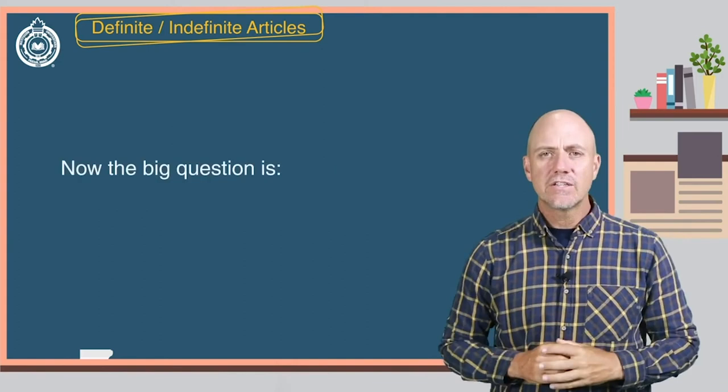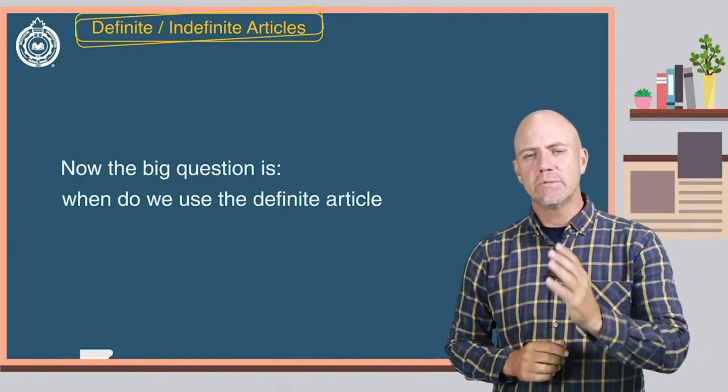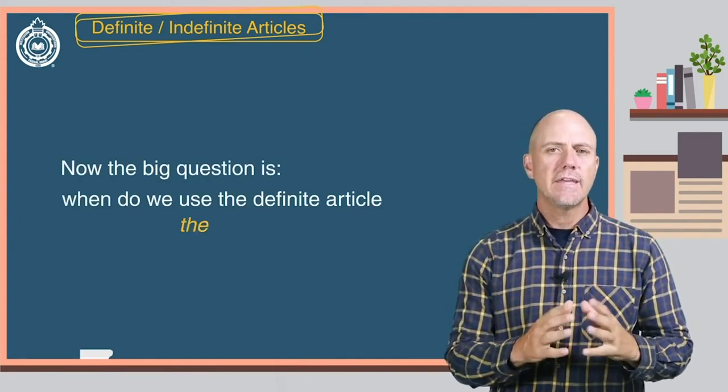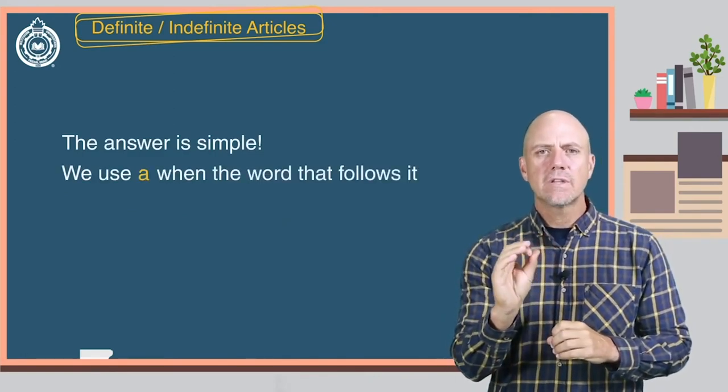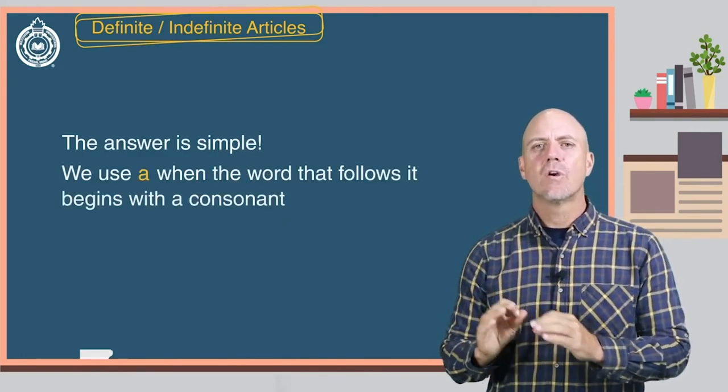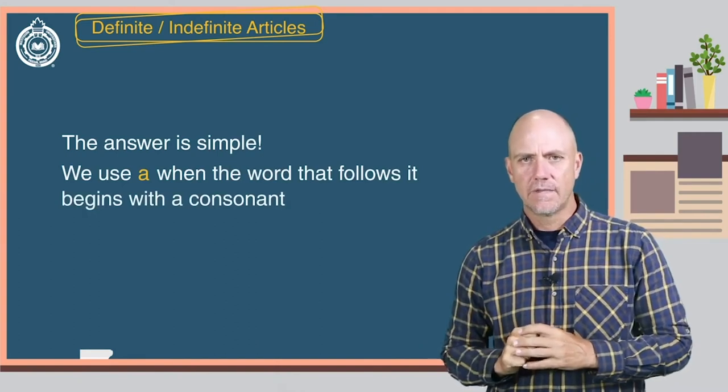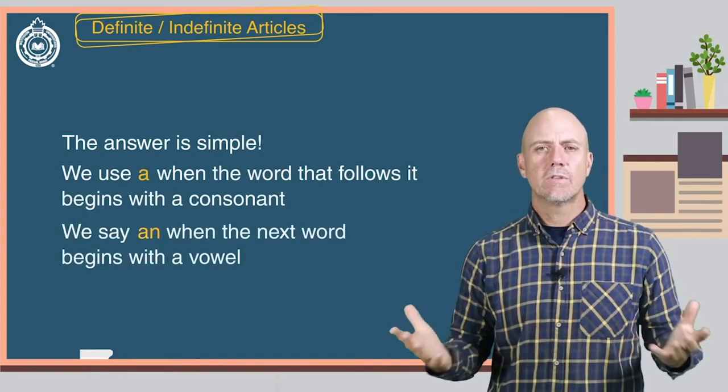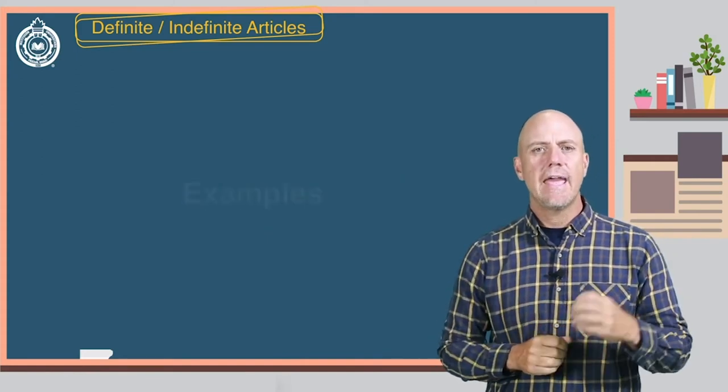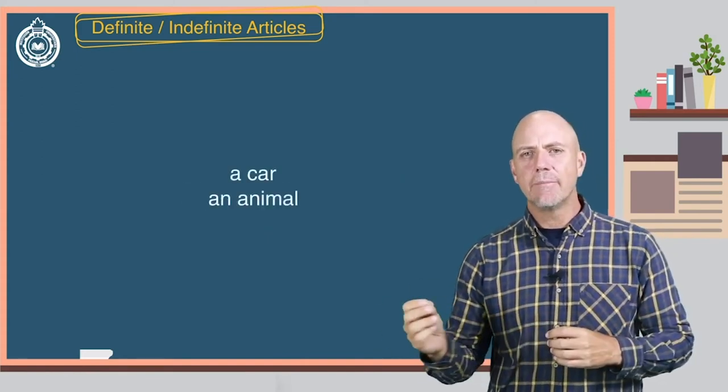Now the big question is, when do we use the definite article the in English? The answer is simple. We use a when the word that follows it begins with a consonant. We say an when the next word begins with a vowel. Here are some examples: a car, an animal.